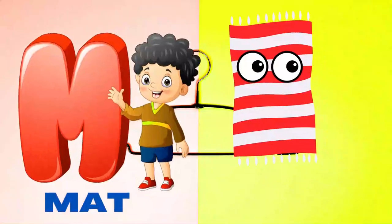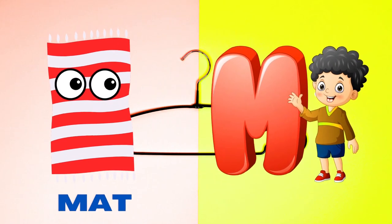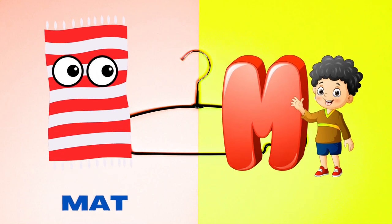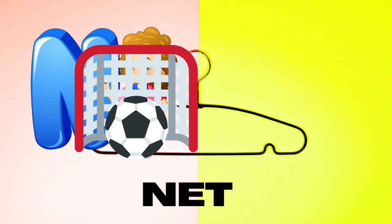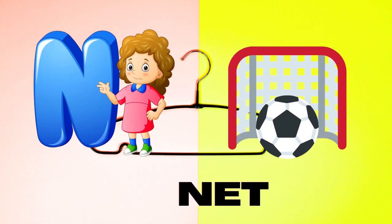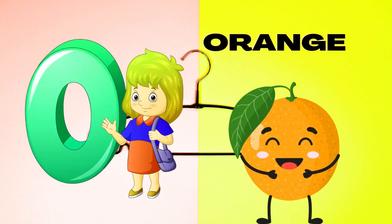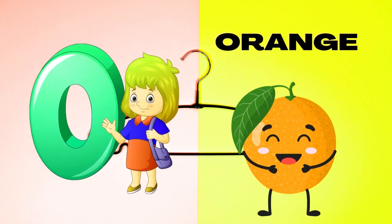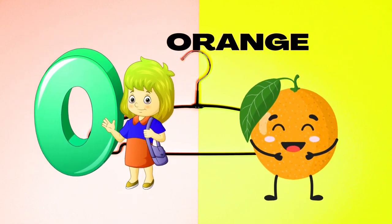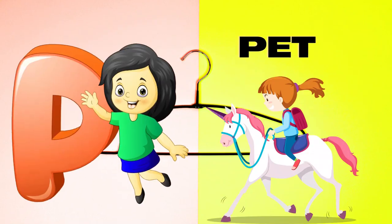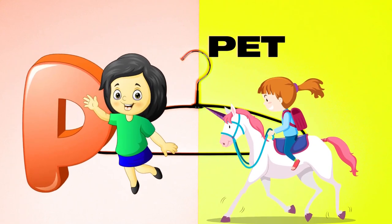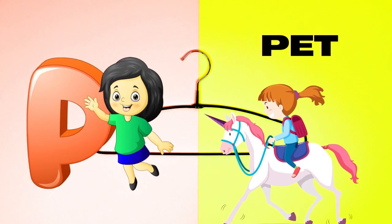M is for Mat, M-M-Mat. N is for Net, N-N-Net. O is for Orange, O-O-Orange. P is for Pet, P-P-Pet.